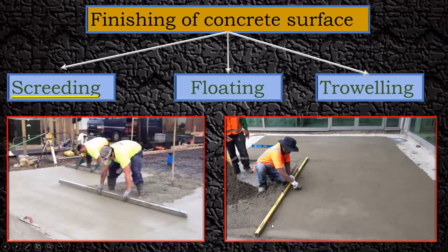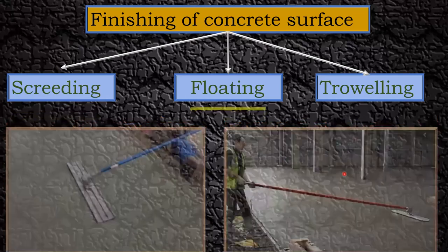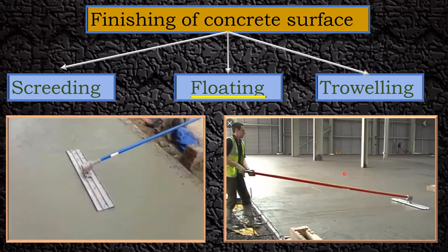This operation is called screeding. Once the concrete has been placed and vibration is done, we deploy one or two masons and they create a level surface. With the help of an aluminium rod, they do this kind of activity — this is called screeding. For floating, we make use of a small equipment, and with the help of this we do the floating to get a very clean surface at the top.